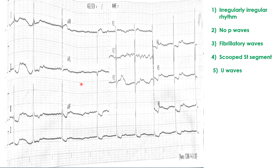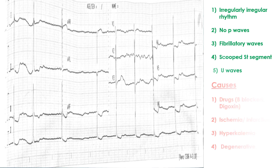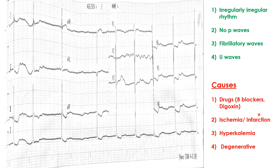The next question is: what might be the cause for this? The possible causes that can be seen in such cases are: drugs including beta blockers or other rate-limiting drugs, and digoxin; ischemia or infarction; hyperkalemia; or age-related degenerative causes. Always remember these four causes when you see such a rhythm.